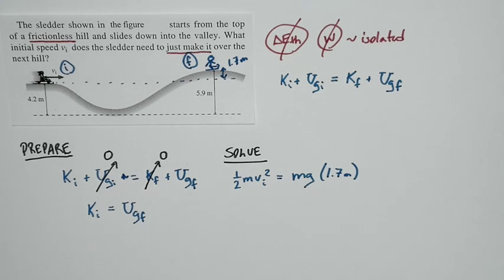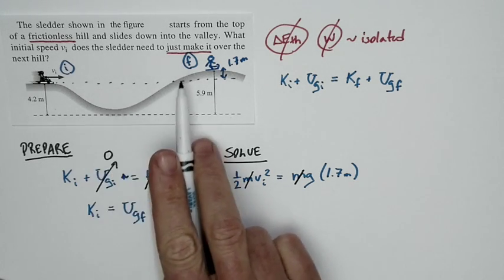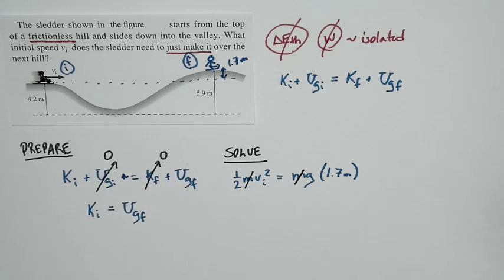So we have a relationship. Oh, something else happens here too. Notice this. In this equation, I've got an m on this side. I have an m on this side. They cancel. So the mass doesn't matter. That's a good thing because we weren't given the mass in the problem statement.